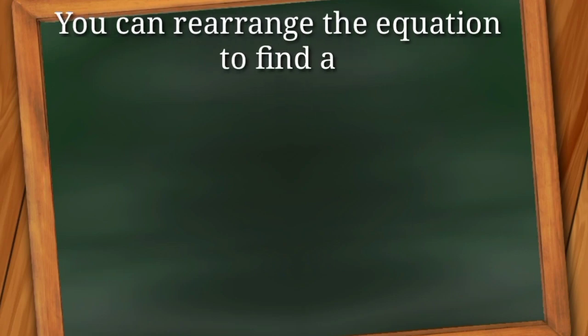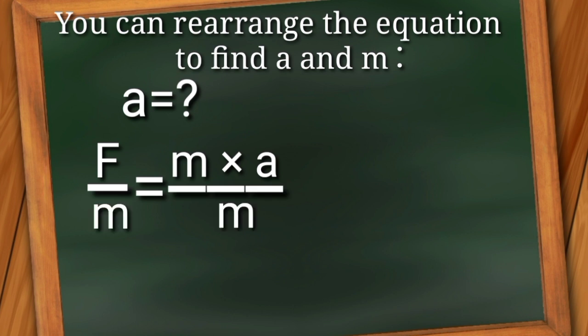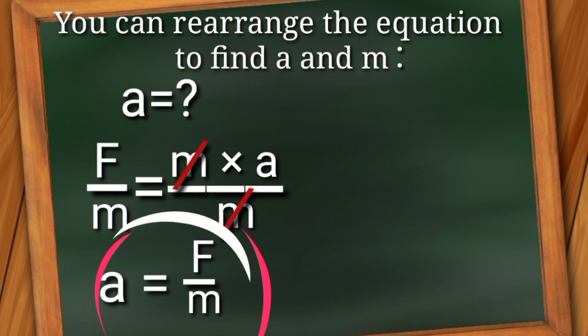You can rearrange the equation to find A and M. In finding A, write down the equation F = M × A, divide both sides by M, then cancel out M. The final formula for acceleration is A = F / M.